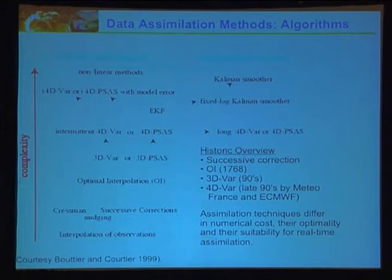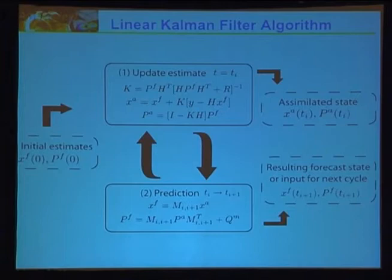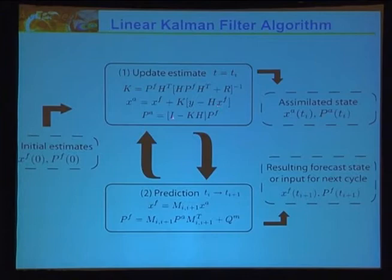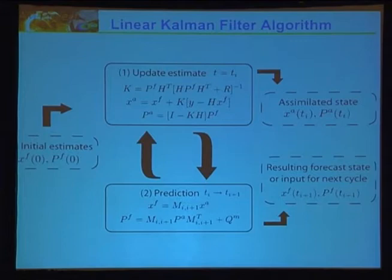The particular method we'll discuss is the ensemble Kalman filter. First, the linear Kalman filter algorithm: you have an initial state, put it through a model, the model gives a prediction, and you get your covariance matrix. This information is fed to the assimilation, which combines observations Y, the previous state estimate, and statistics to get an improved state and updated model covariance matrix. Then you use this assimilated state again in prediction, creating a cycle of correction, prediction, correction, prediction, up until you have a forecast.